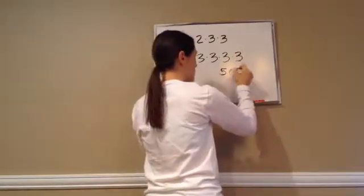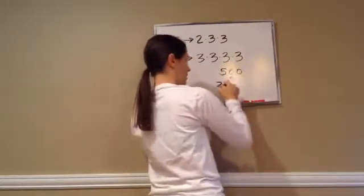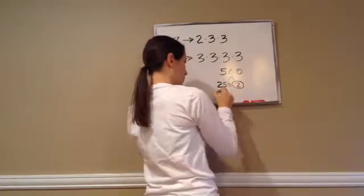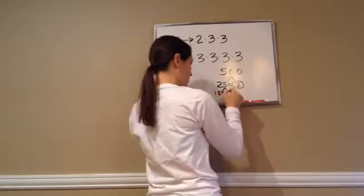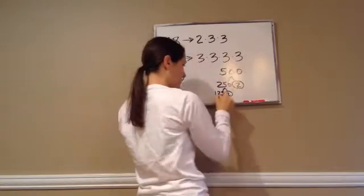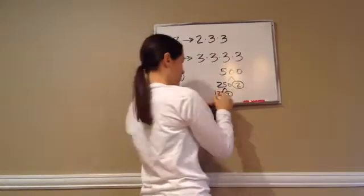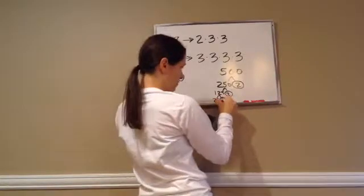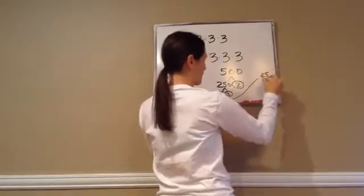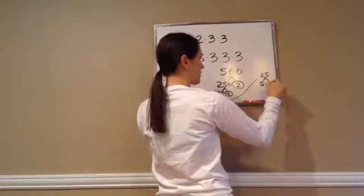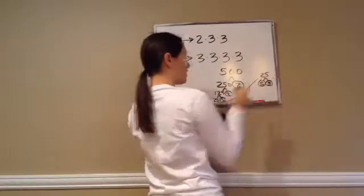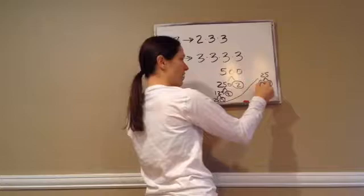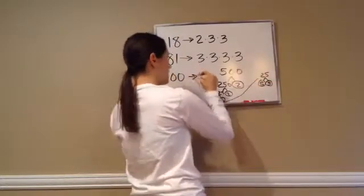Now for 500: 250 and 2 — 2 is a prime number. Then 125 and 2 — 2 is a prime number. Then 25 times 5 — 5 is a prime number. And all we've got left is 25, which is 5 times 5. So we've gotten the prime factors: 2, 2, 5, 5, 5.